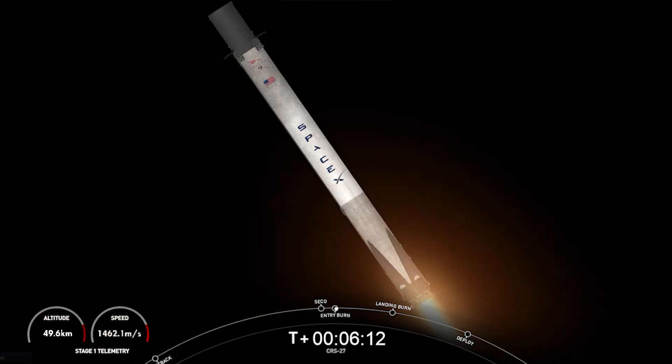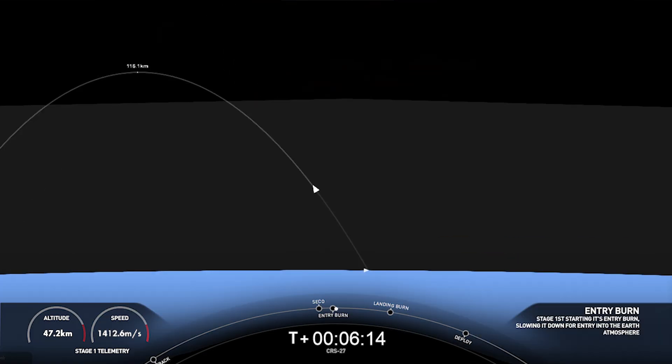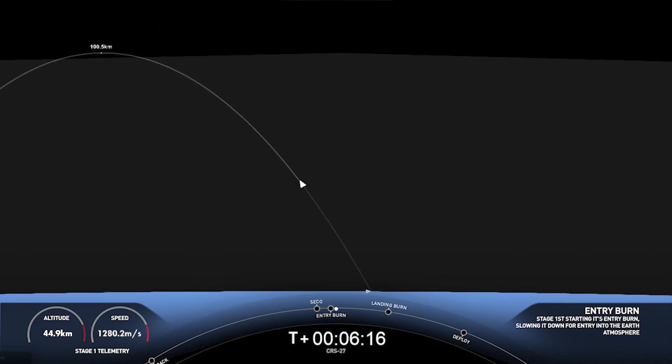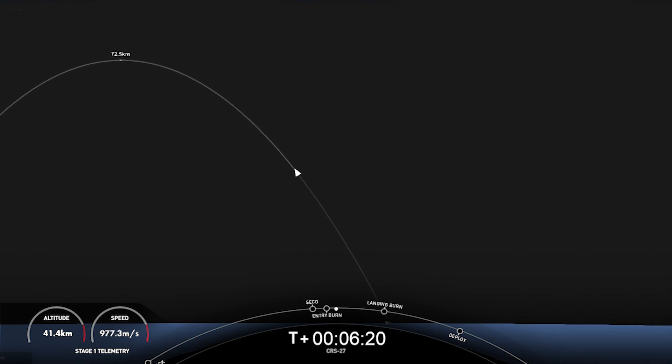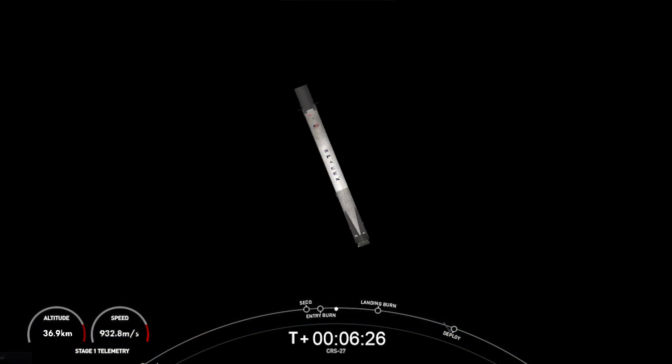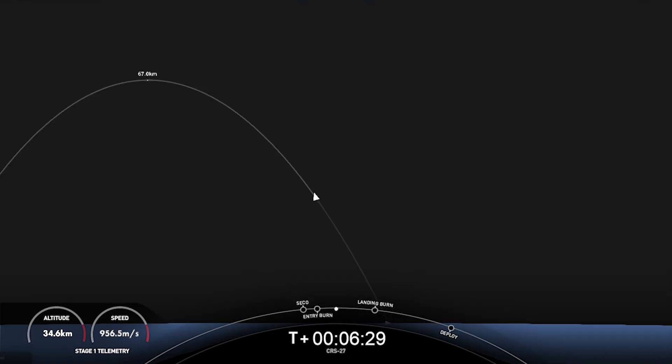Stage 1 entry burn startup. Right now on the right side of your screen, you can currently see Stage 2. And there's confirmation of first stage entry burn startup. And probably saw it as well. Again, this is the first of two burns that the booster performs before landing on the drone ship. Stage 1 entry burn shutdown.